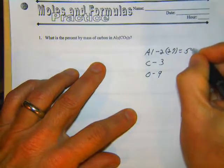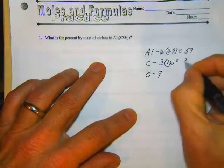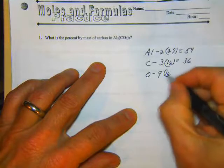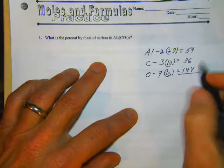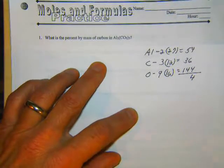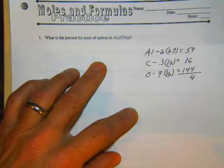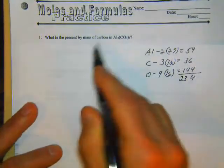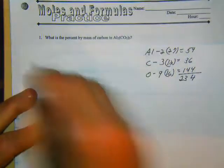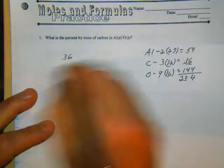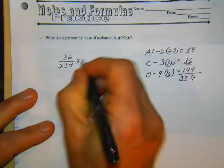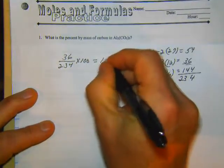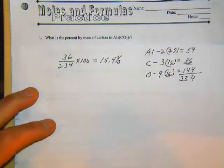Aluminum from the periodic table is 27, so that's going to equal 54. Carbon is 12, giving 36. Oxygen is 16 — we keep running into the same ones. If we add these together it ends up being 234. Let me check: 54 plus 36 plus 144 — yep, 234. We want how much carbon is in the whole thing, so 36 over 234 times 100 comes out to about 15.4 percent.